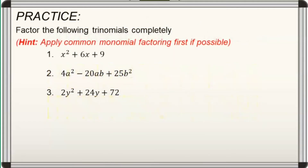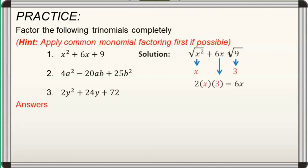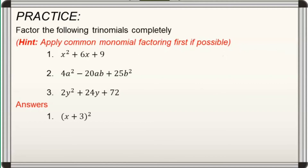Let's have more practice. Factor the following trinomials completely if possible. For your hint, apply common monomial factoring first if possible. Let us discuss the answers. For number 1, as we can see, it is a PST. Using the square roots of the first and last terms as well as the sign of our middle term, we have quantity x plus 3 squared. Hence, the factored form of x squared plus 6x plus 9 is equal to the quantity x plus 3 squared.